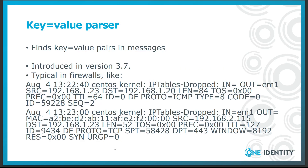The key-value parser can find key-value pairs in log messages. It was introduced in syslog.ng 3.7. This format is typical for firewall logs but is also used by many other applications. Here are some example log messages from iptables.